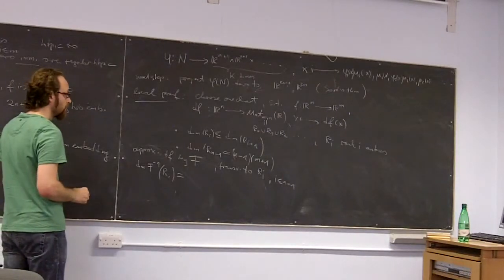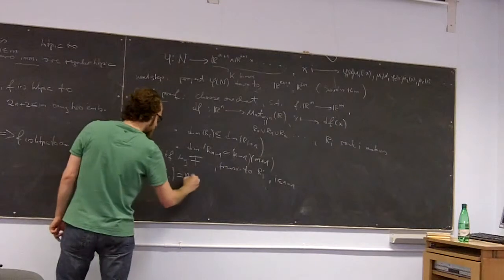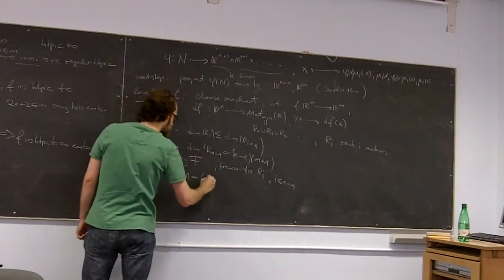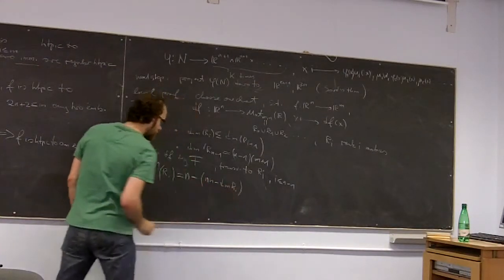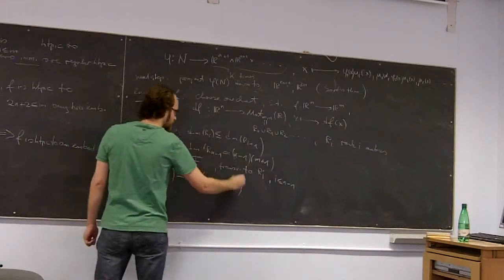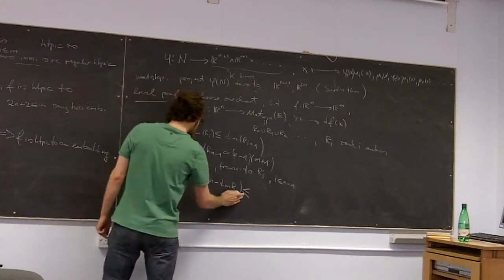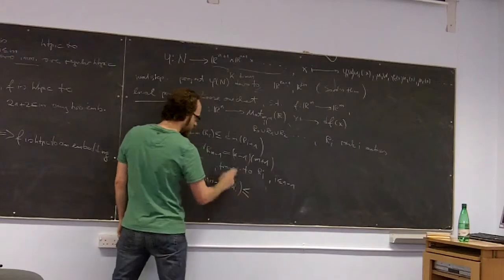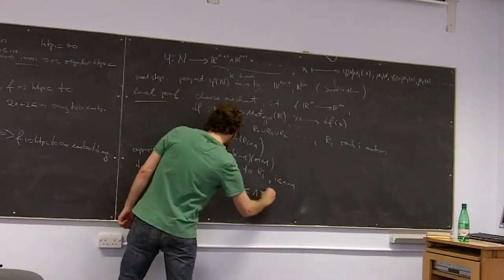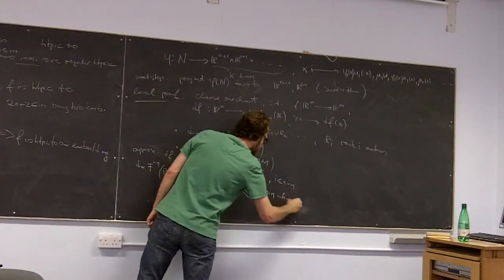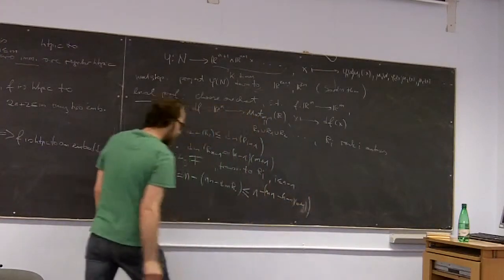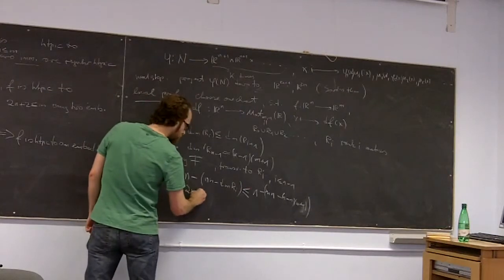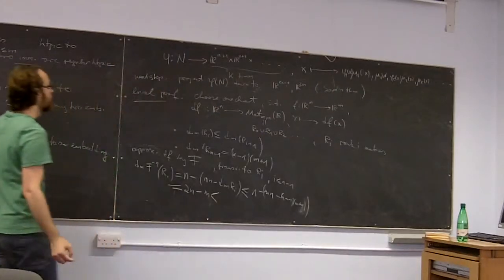Well the codimension is fixed, so it's just n minus the codimension, and the codimension is the same as the codimension here. So the dimensions are increasing, so this is less equal the dimension of r_{n-1}, and this is n minus 1 times n plus 1, so n minus n plus 1 times n plus 1. And this is because...